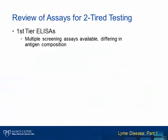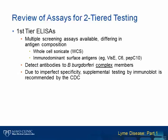There are multiple screening ELISAs available commercially for use as a first-tier test, which primarily differ in their antigenic composition. Some ELISAs use a whole cell Borrelia burgdorferi sonicate as the adhered target antigen, whereas others use unique recombinant immunodominant surface antigens for antibody detection. Due to the conserved nature of these surface-expressed proteins, these ELISAs are capable of detecting antibodies to all members of the Borrelia burgdorferi complex. However, their specificity is imperfect and false positive results can occur in both healthy individuals living in non-endemic areas and in individuals with other infectious or non-infectious conditions. For this reason, the CDC continues to recommend supplemental testing by immunoblot of positive or equivocal first-tier screening ELISAs.